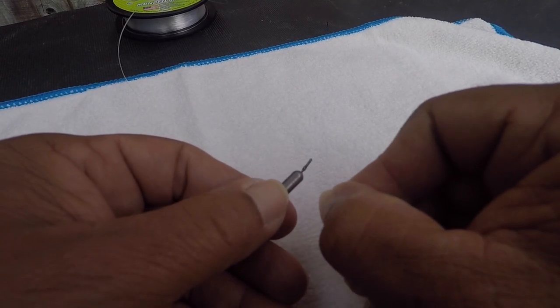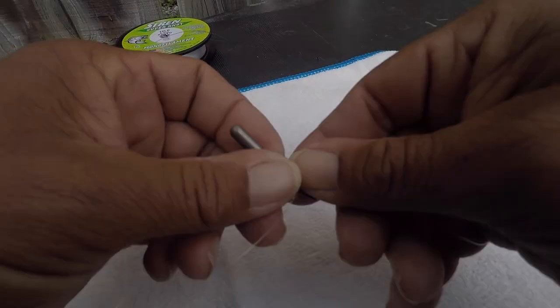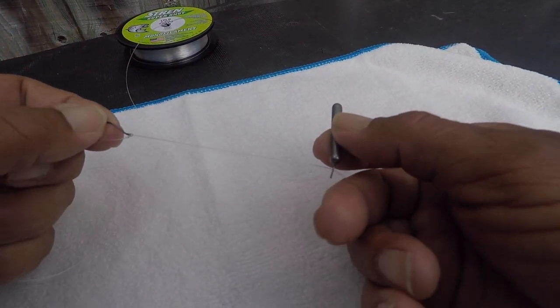Now all you have to do is attach your weight however far you want this bait to be off of the bottom, attach your weight on there, and you're good to go.